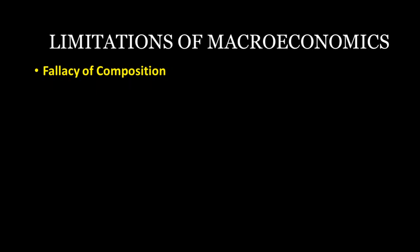For example, in a class, if five students scored 70% marks, concluding that all the students scored 70% marks would be fallacious. In economics, one important example of the fallacy of composition is the paradox of thrift.